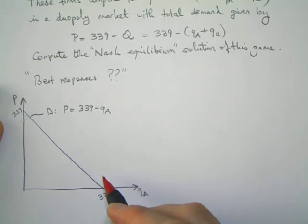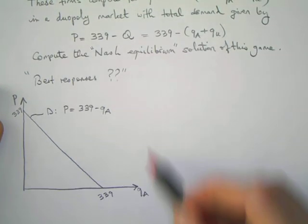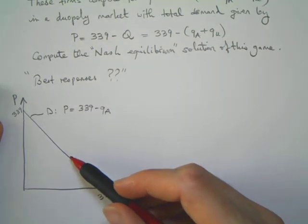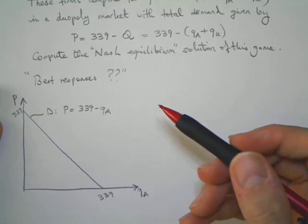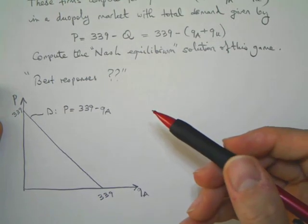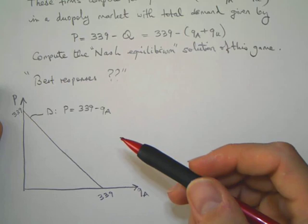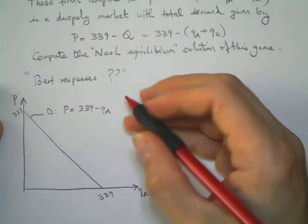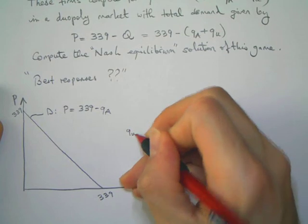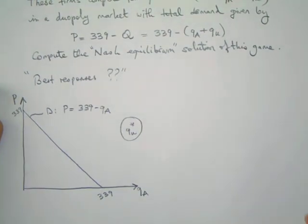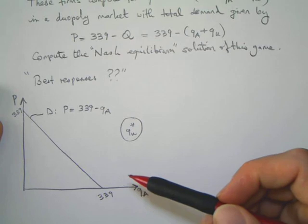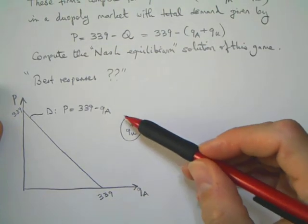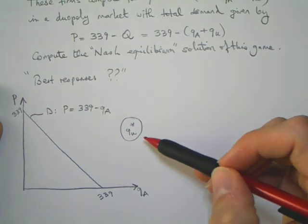This is not the demand that American Airlines actually faces. This is the market for American Airlines but not the demand they face. American Airlines have to consider their opponent's strategy. In this simultaneous move game, assuming that the rival will pick QU star, what would be the best strategy for American Airlines?